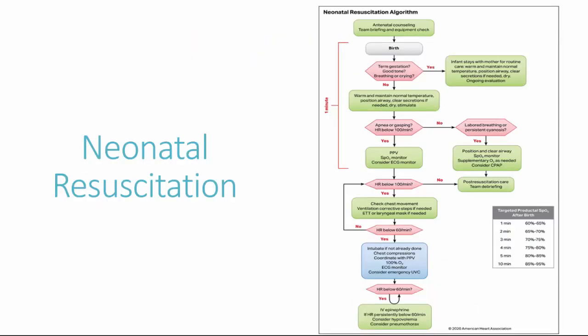The neonatal resuscitation algorithm should be considered a continuum of care. The interventions outlined in the first 60 seconds are important to execute quickly and efficiently. The neonatal resuscitation provider course divides the first 60 seconds into two sets of 30. At birth, providers should immediately perform initial interventions of drying, warming, suctioning, and stimulation. Approximately 30 seconds after birth, reassess the neonate's response. If inadequate, administer supplemental oxygen, position the airway, and/or administer CPAP. After the second 30-second interval, evaluate effectiveness and determine if more aggressive treatment is necessary.